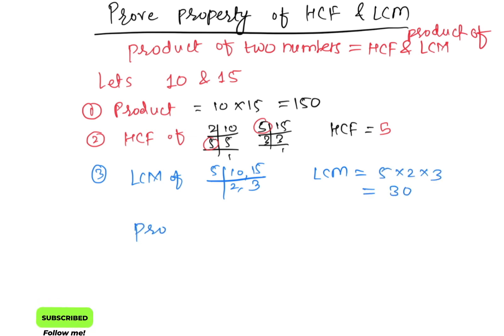So finally we'll write down the formula product equals HCF into LCM. So here product is 150 which we have found in step 1. And then HCF is 5. LCM is 30. So here we get right hand side is equal to left hand side.